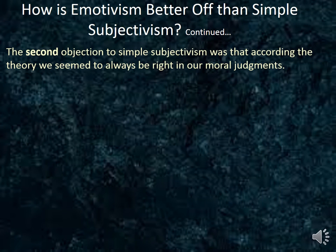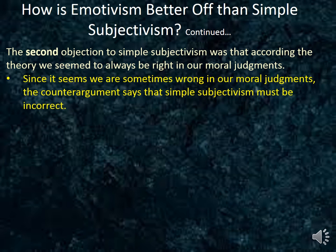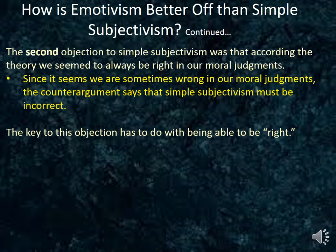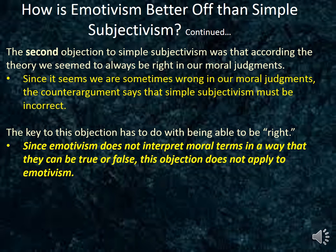The second objection to simple subjectivism was that according to the theory, we seem to always be right in our moral judgments. Since it seems that we are sometimes wrong in our moral judgments, the counter-argument says that simple subjectivism must be incorrect. Notice that the key to this objection has to do with being able to be right, and since emotivism does not interpret moral claims in a way that they can be either true or false — that is to say right or wrong — this objection does not apply to emotivism.